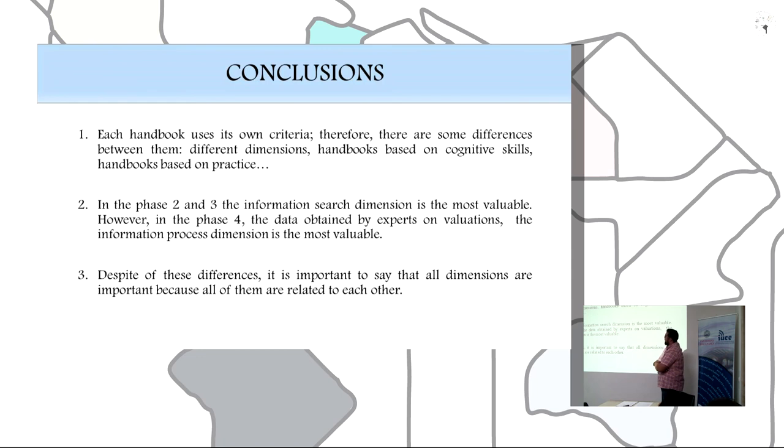Secondly, in phases 2 and 3, the information search dimension is the most valuable. However, in phase 4, the data obtained by experts' valuation shows the information process dimension is the most valuable.